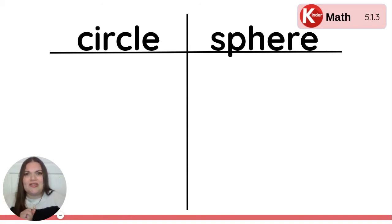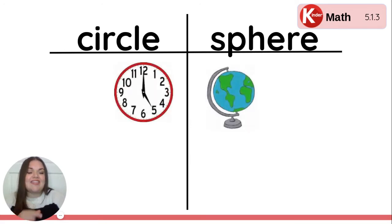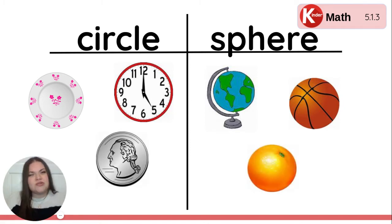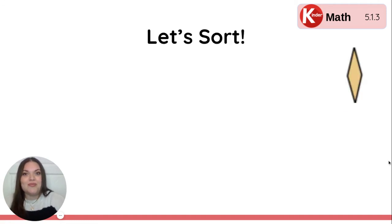First, do you remember when we took a look at the circle and spheres yesterday? The clock was a circle, the globe was a sphere, the plate was a circle, the basketball was a sphere, the coin was a circle, and the orange was a sphere. Do you remember how we decided if a shape was a circle or a sphere? Yes, all of our circles are 2D shapes and they are flat, flat, flat, and all of our spheres are 3D shapes and they sit up, up, up. Great job.